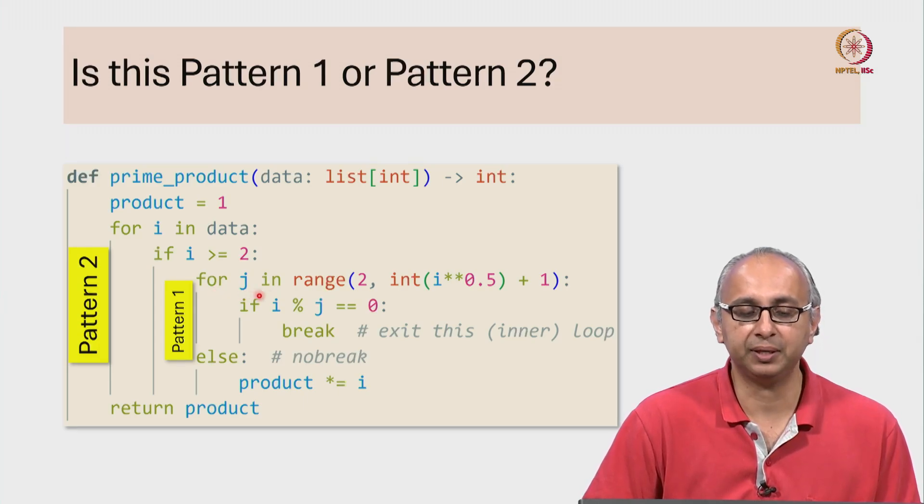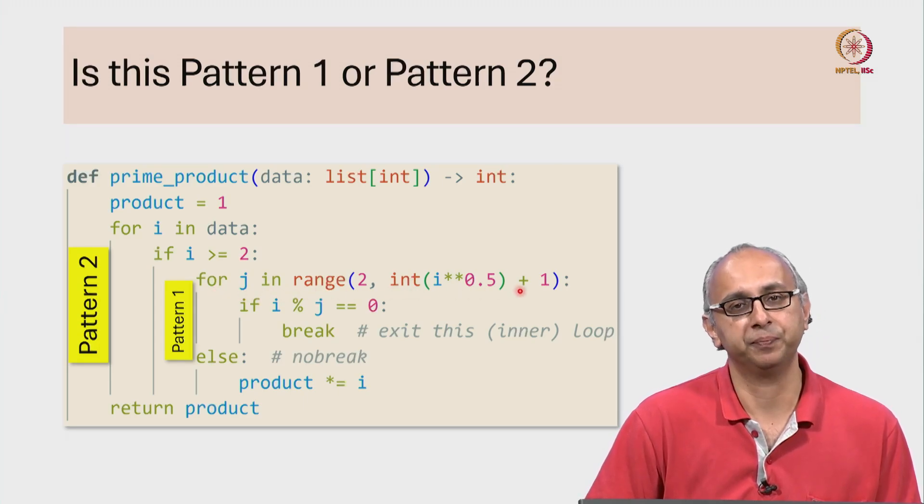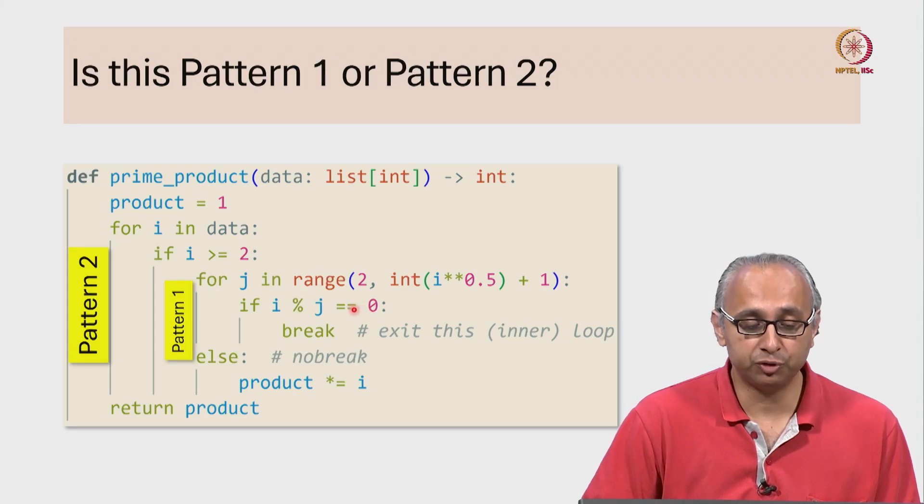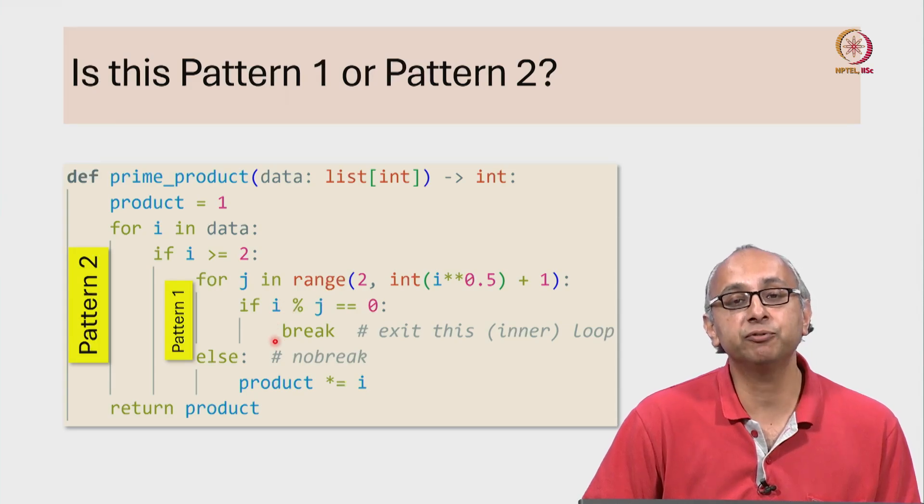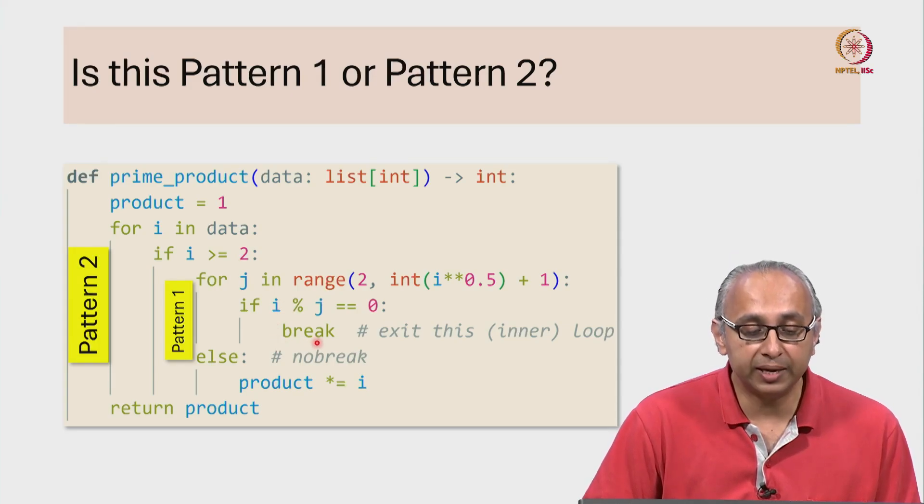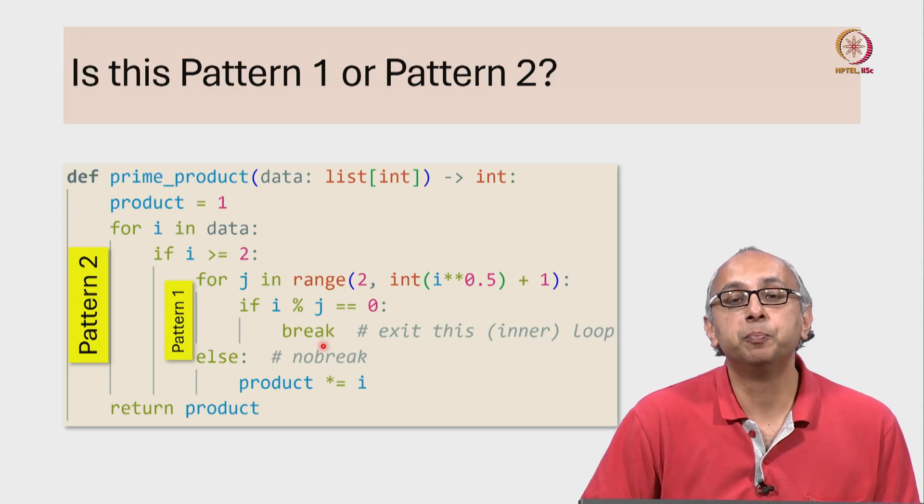You see here we are going to examine various values of j. If we ever find a value of j that is a factor of i, meaning i remainder j is 0, then we will come into this if condition and we will encounter this statement. A break statement exits this loop.